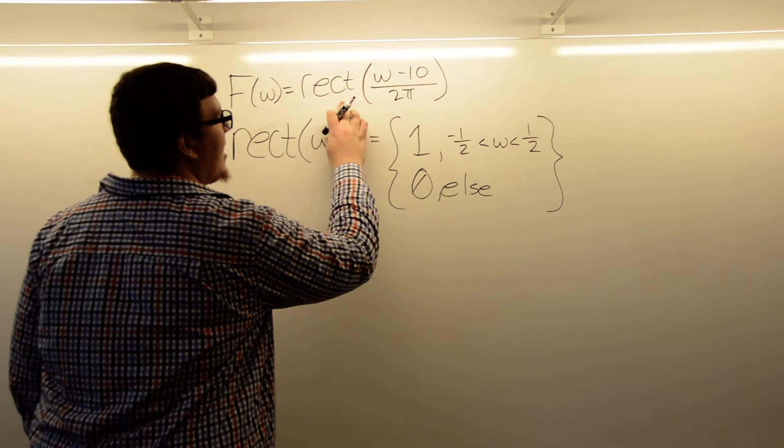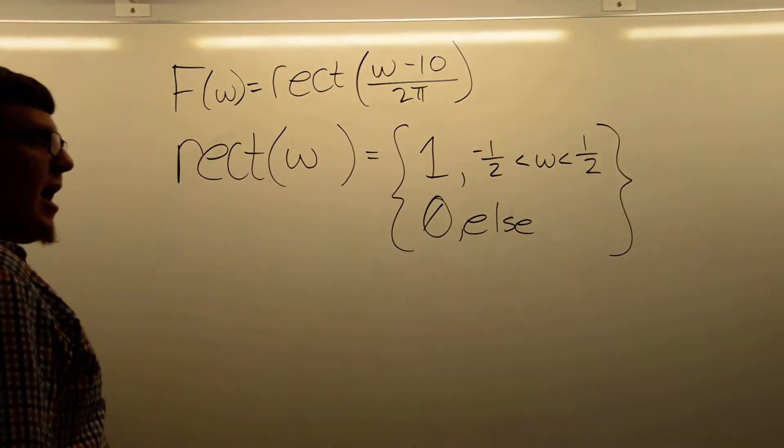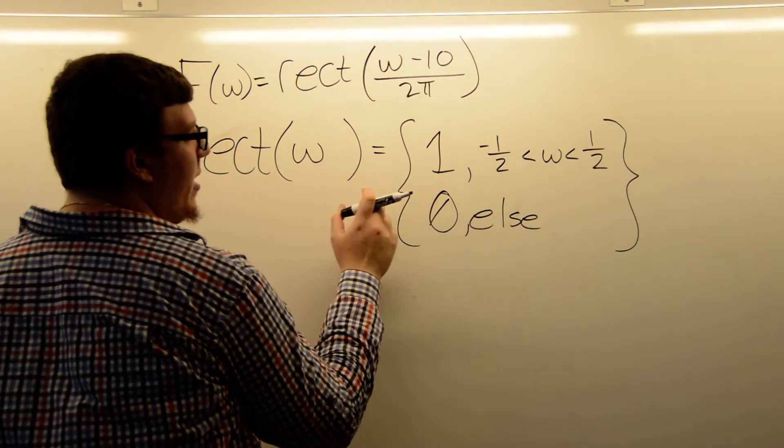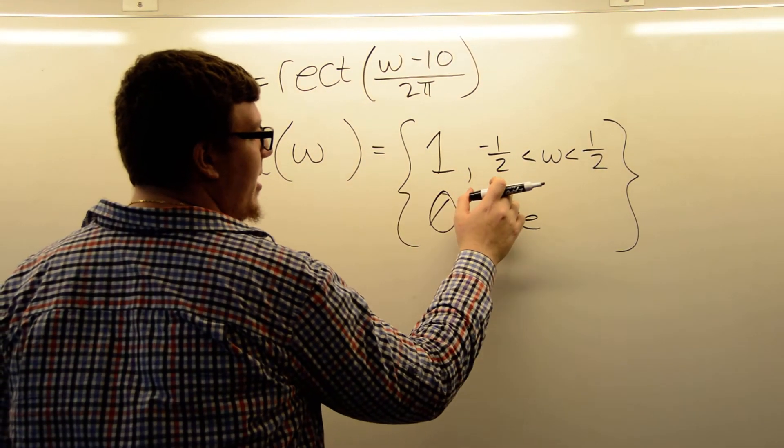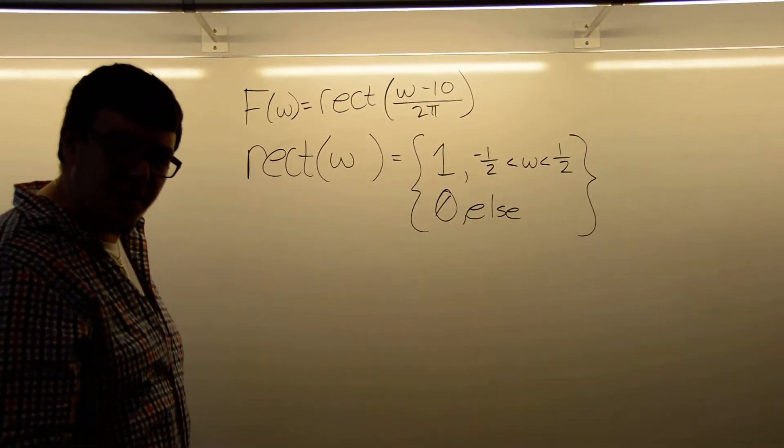The function in the frequency domain is a rectangle function of omega minus 10 over 2π. And so I've defined the rectangle function below as the rectangle of ω being 1 between negative 1/2 and 1/2 and 0 otherwise. It's just a switch on, switch off function.